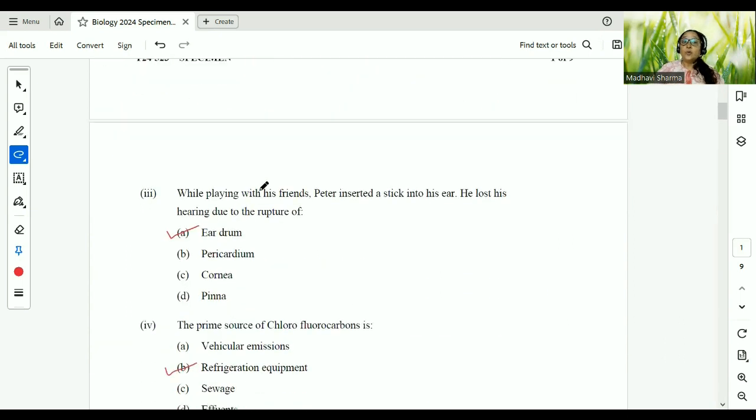Let's go to the third one. While playing with his friends, Peter inserted a stick into his ear. He lost his hearing due to rupture of eardrum. Scientific name of eardrum is tympanum. So anything can come. Pericardium is related to heart. Cornea is related to eyes. And pinna is also ears but external ear. That is external ear. So it has nothing to do with the rupture. So answer is eardrum or tympanum.